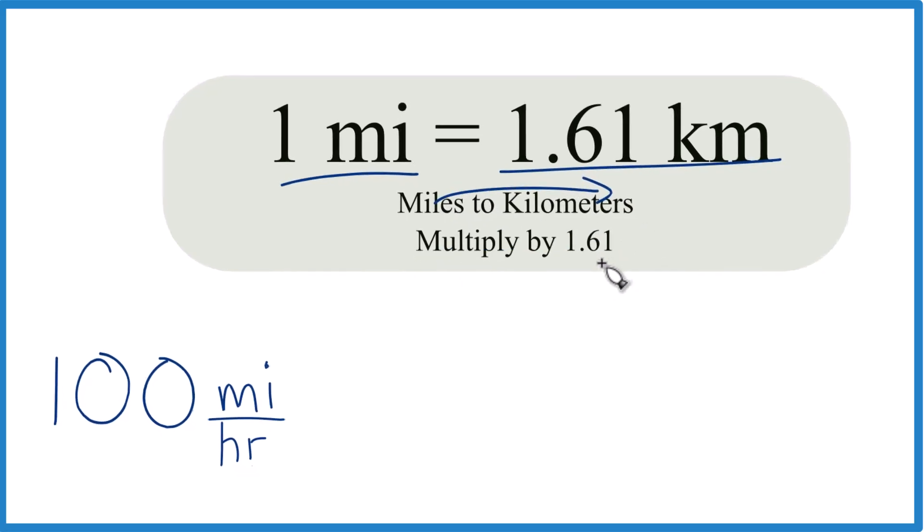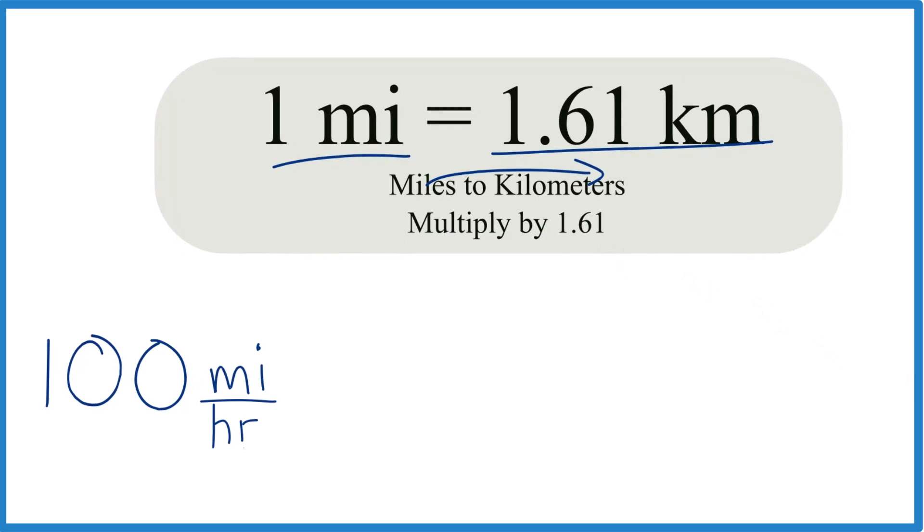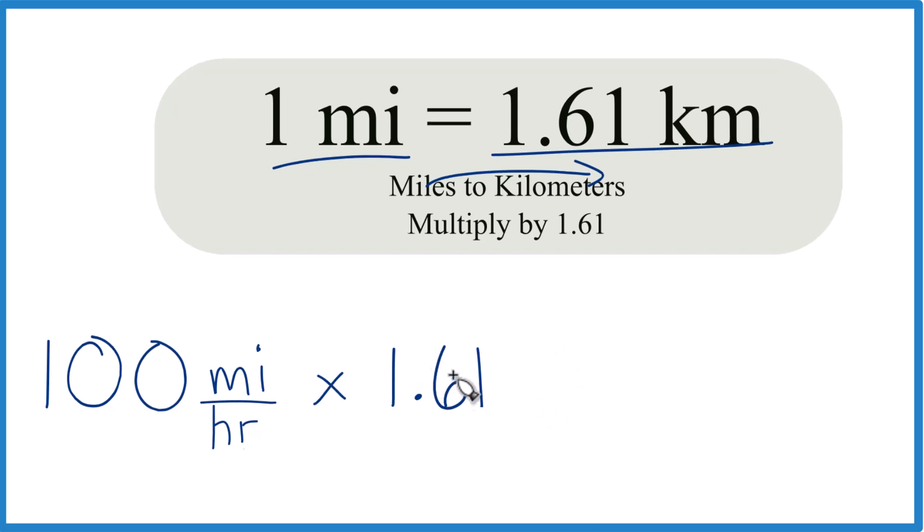We take our hundred miles per hour, multiply it by 1.61, and that would give us kilometers per hour. But understand that this 1.61 is kilometers in one mile per mile.